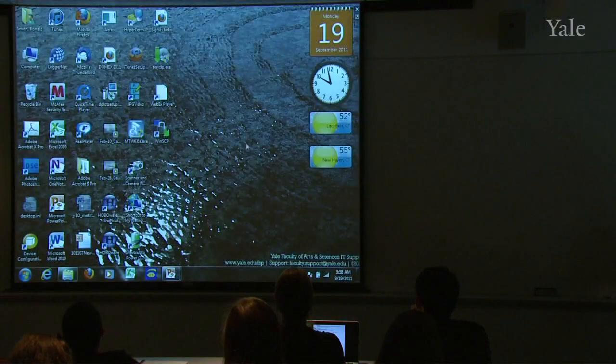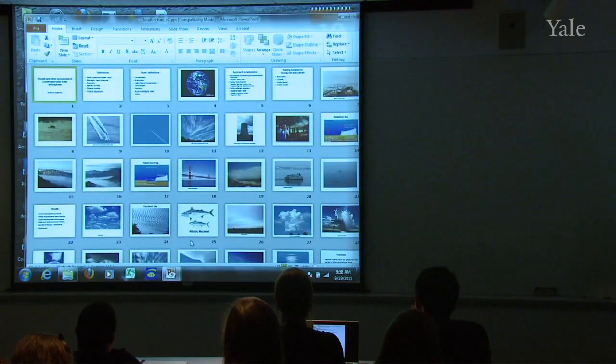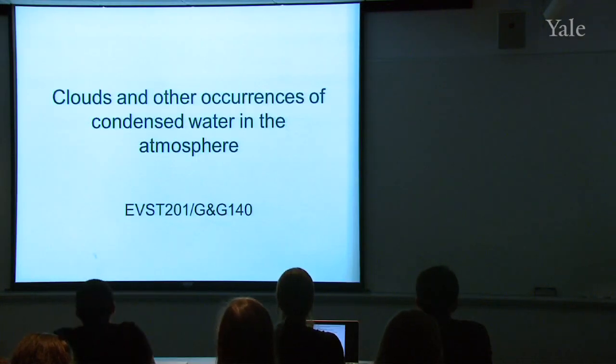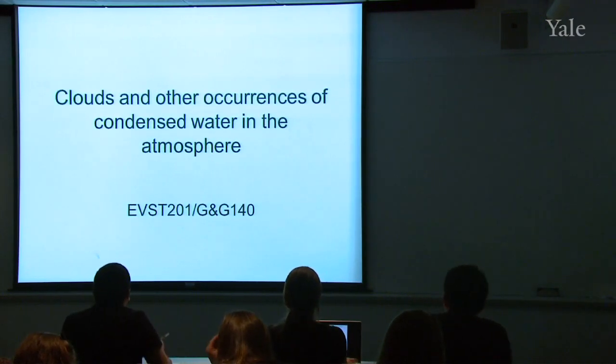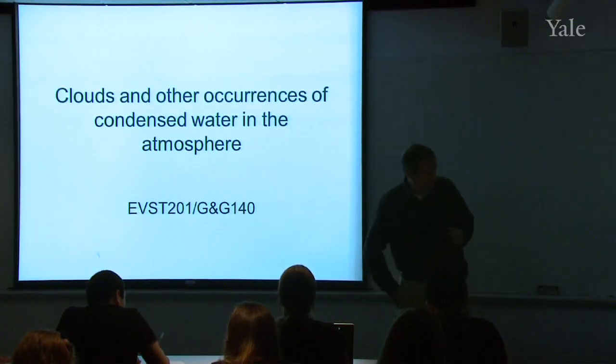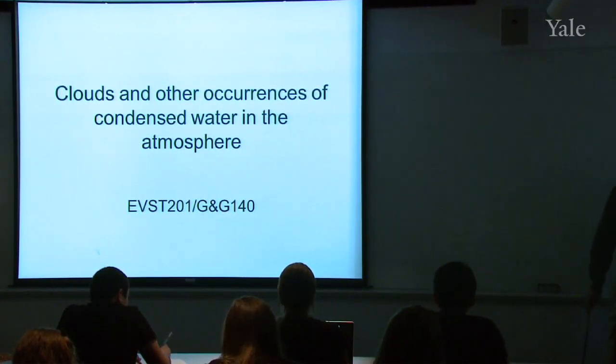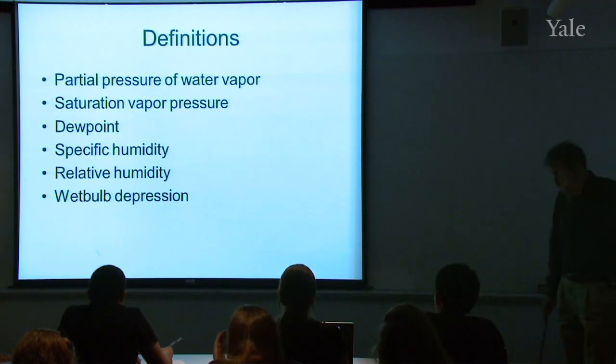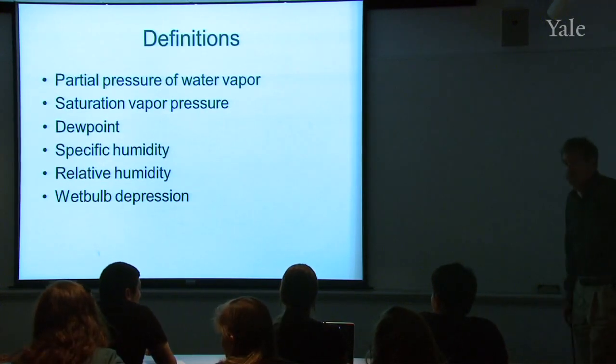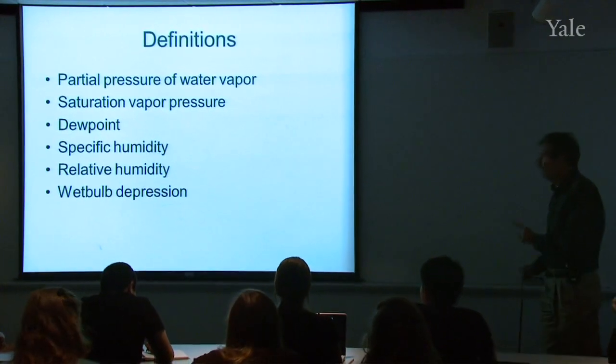Now, I want to switch gears and begin to talk about moisture in the atmosphere. And we'll continue this subject next time as well. So you should be reading in your book now about clouds and precipitation and water vapor in the atmosphere. And this material will be on the examination as well. So I want to start with some definitions. I'm going to run through them very quickly. But you should be aware of each of these six things.